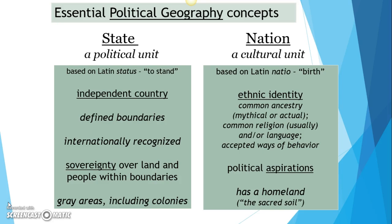Another key point about a nation is that they have political aspirations — they either are or want to be self-controlled. They want that sovereignty or they have that sovereignty. Last but not least, we're talking about groups of people that have homelands — where we can point to on a map and say that's where they come from. It's that sacred soil idea: it's where we come from, where our roots are.